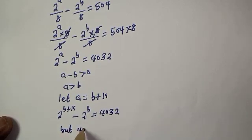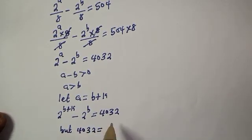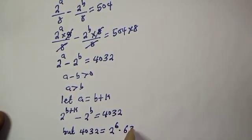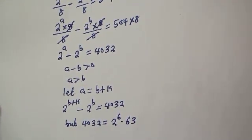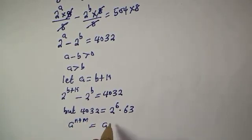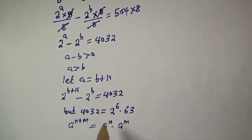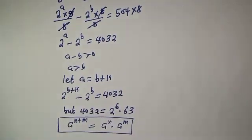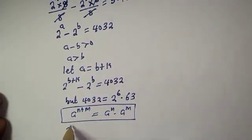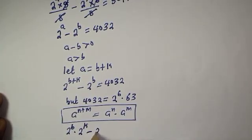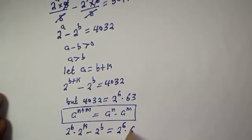Now, 4032 is equal to 2 raised to power 6 multiplied by 63. And using the rule that a raised to power n plus m equals a raised to power n multiplied by a raised to power m, the left side can be written as 2 raised to power b multiplied by 2 raised to power k, minus 2 raised to power b, equals 2 raised to power 6 multiplied by 63.